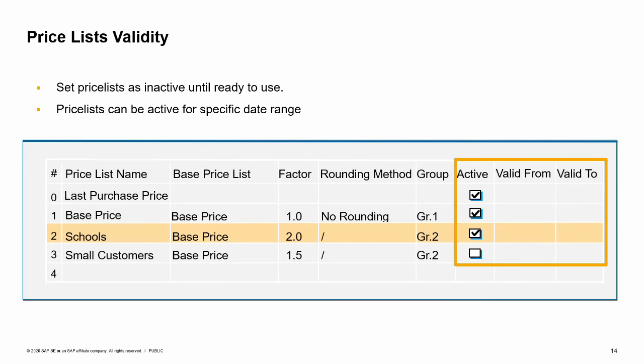You can set a price list as inactive until you are ready to use it. A company can set up pricing in advance and activate a price list when required. You can also set a price list to be active for a specific date range, allowing companies to offer price changes for a limited period. The pricing will only be effective when the first validity date is reached. When the range is no longer valid, the price list becomes inactive. If you use an inactive price list in a document, no pricing will appear.